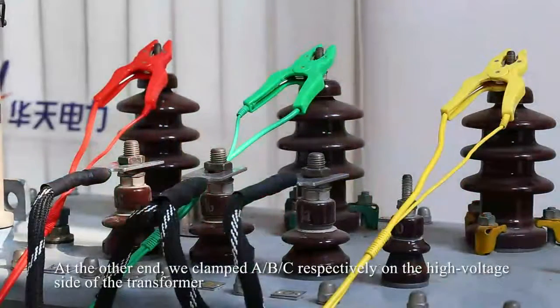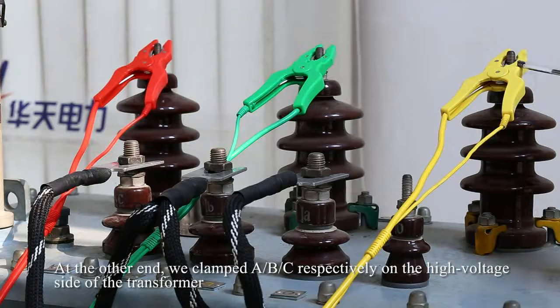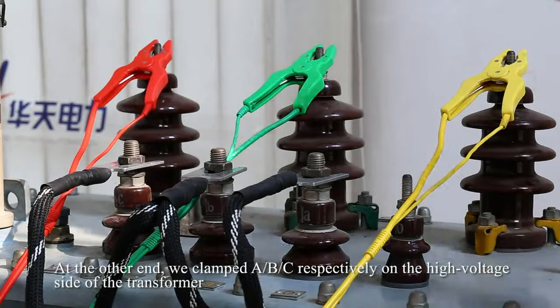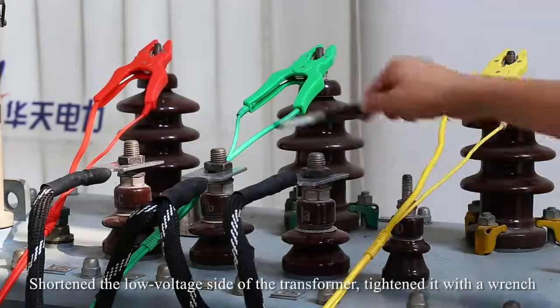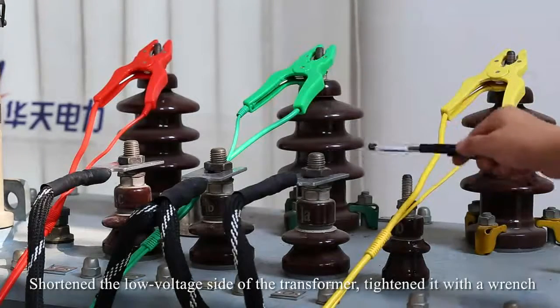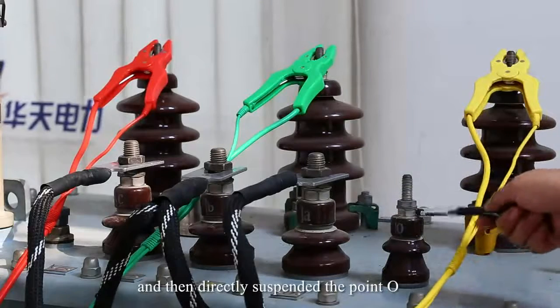At the other end, we clamp A, B, C respectively on the high-voltage side of the transformer. Short the low-voltage side of the transformer, tighten it with a wrench, and then directly suspend terminal O.